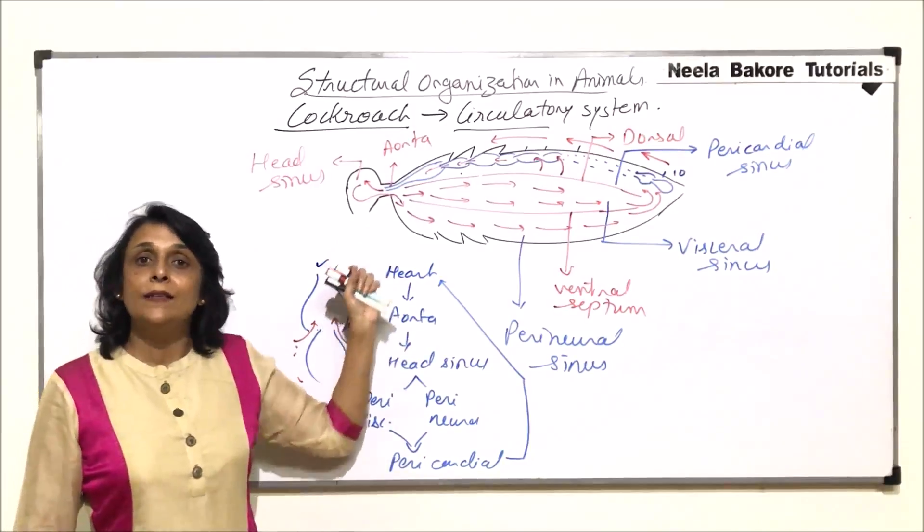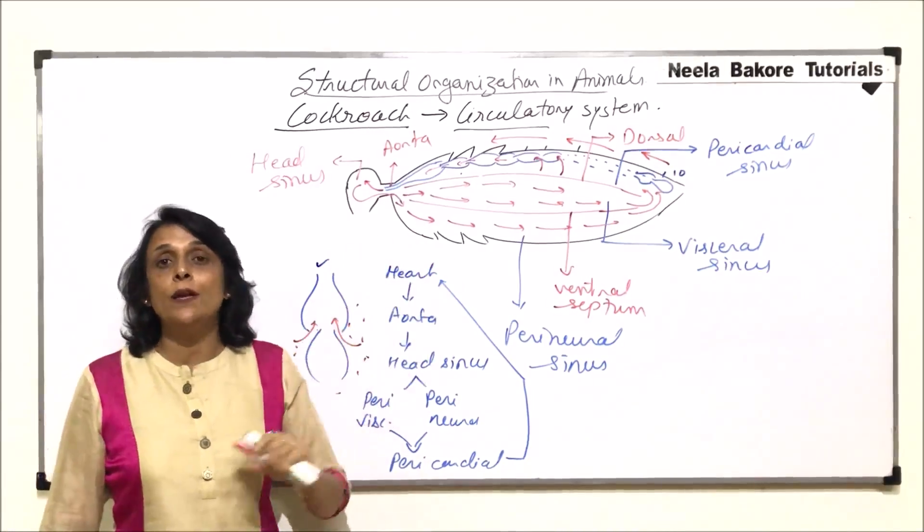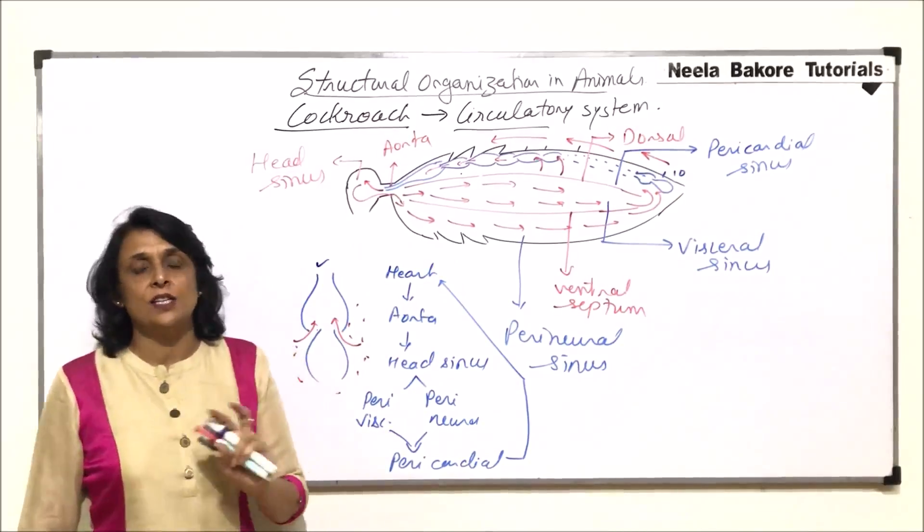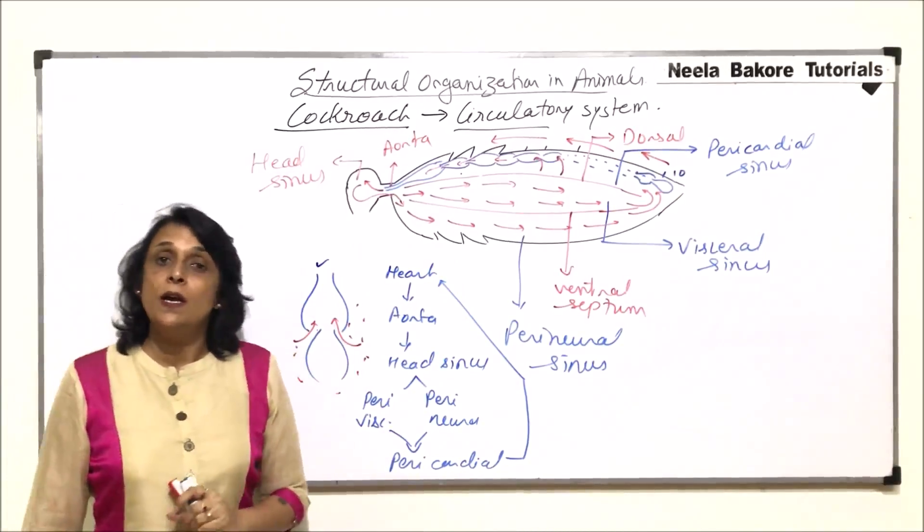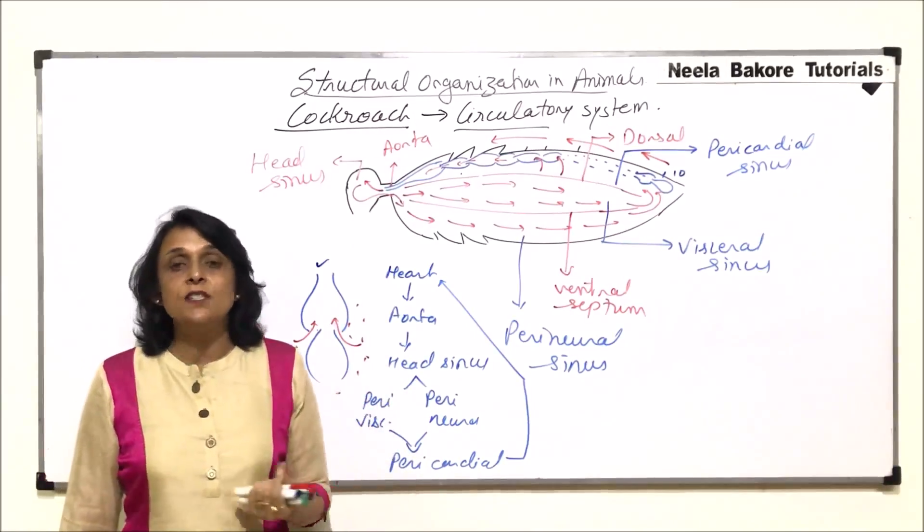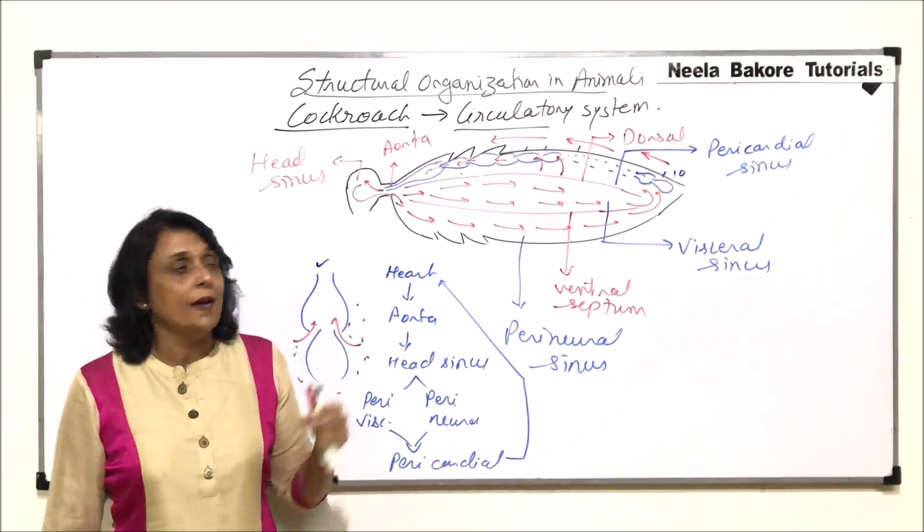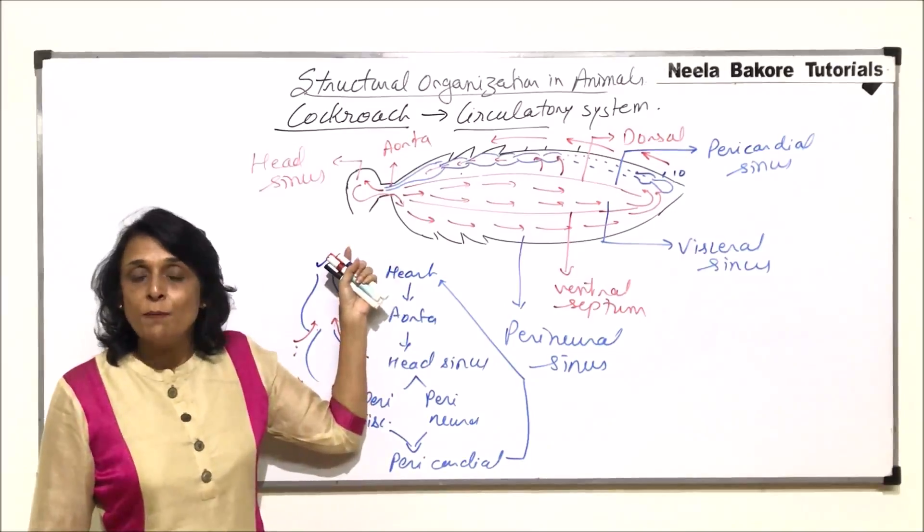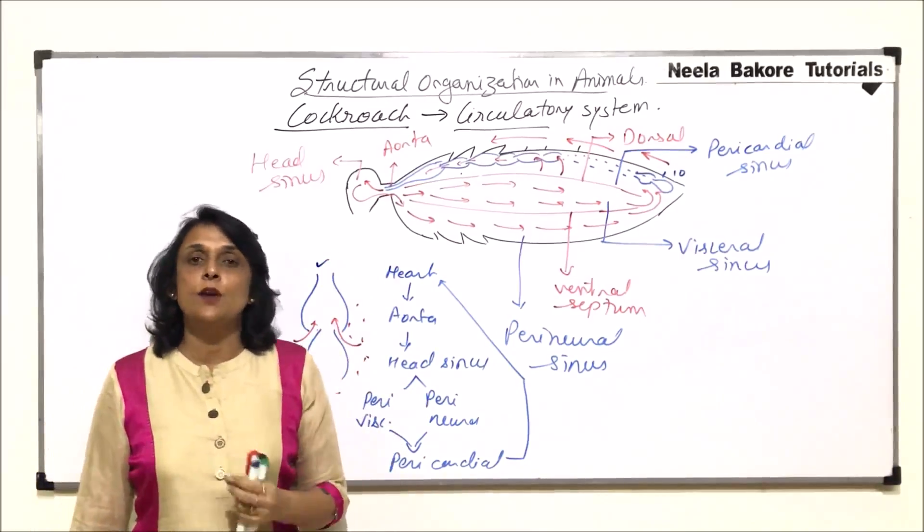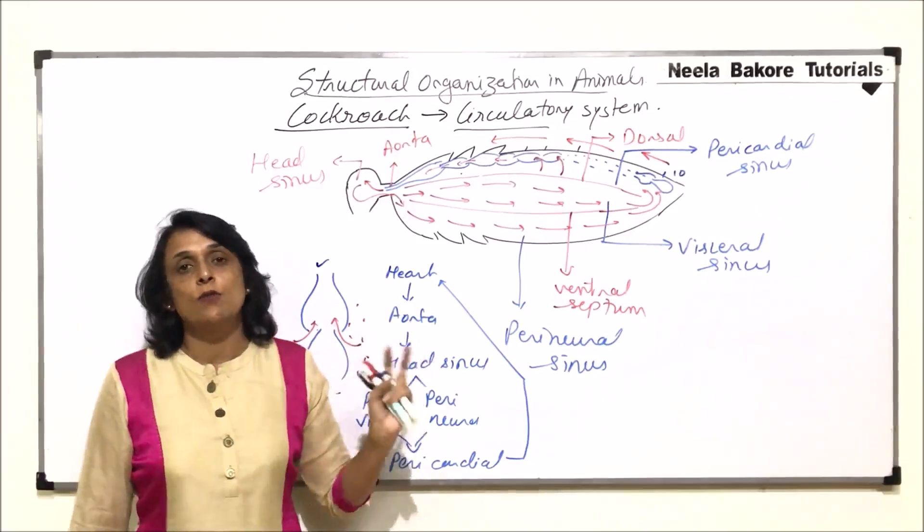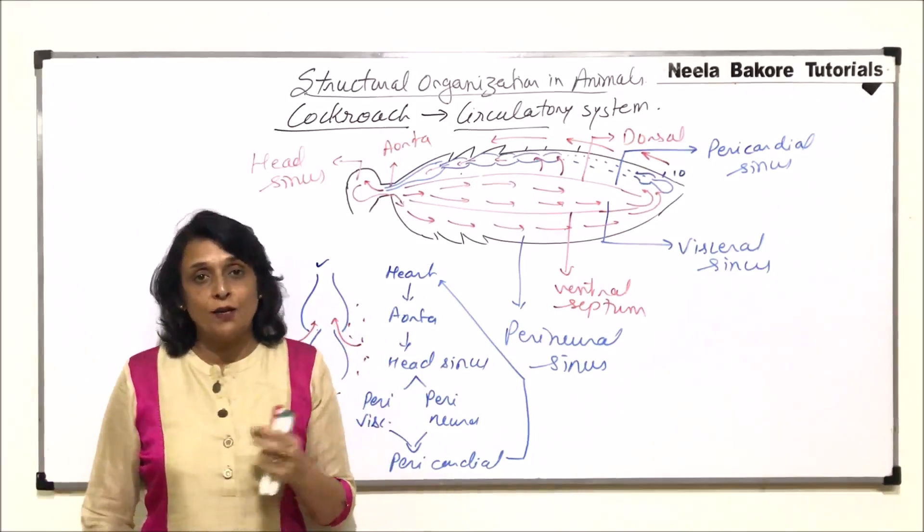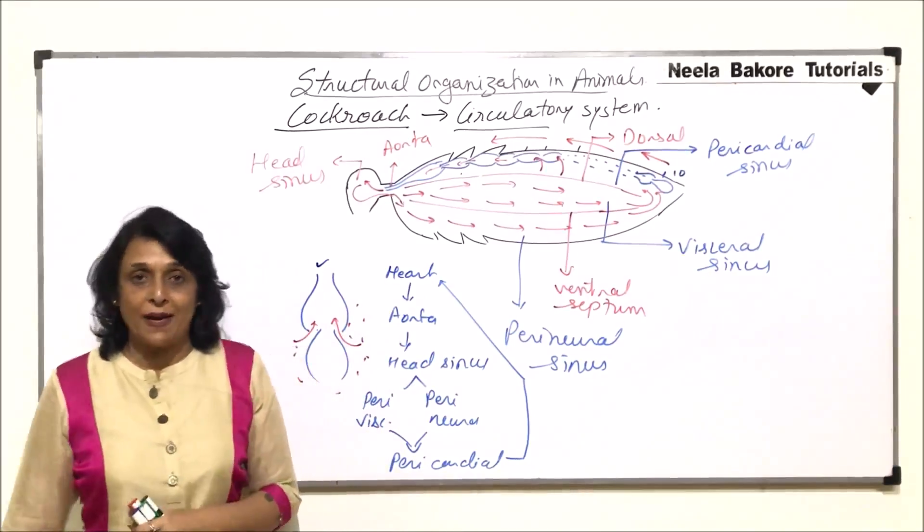As we already know that the hemolymph is without any respiratory pigment. And that is why it is whitish or pale yellowish color. Normally there is a pigment like hemoglobin which gives the color to that fluid. So as there is no pigment here, we do not see any color. And that is why sometimes instead of calling it blood, it is known as hemolymph. Because it looks like lymph but works like blood. So hemolymph, two things combined.